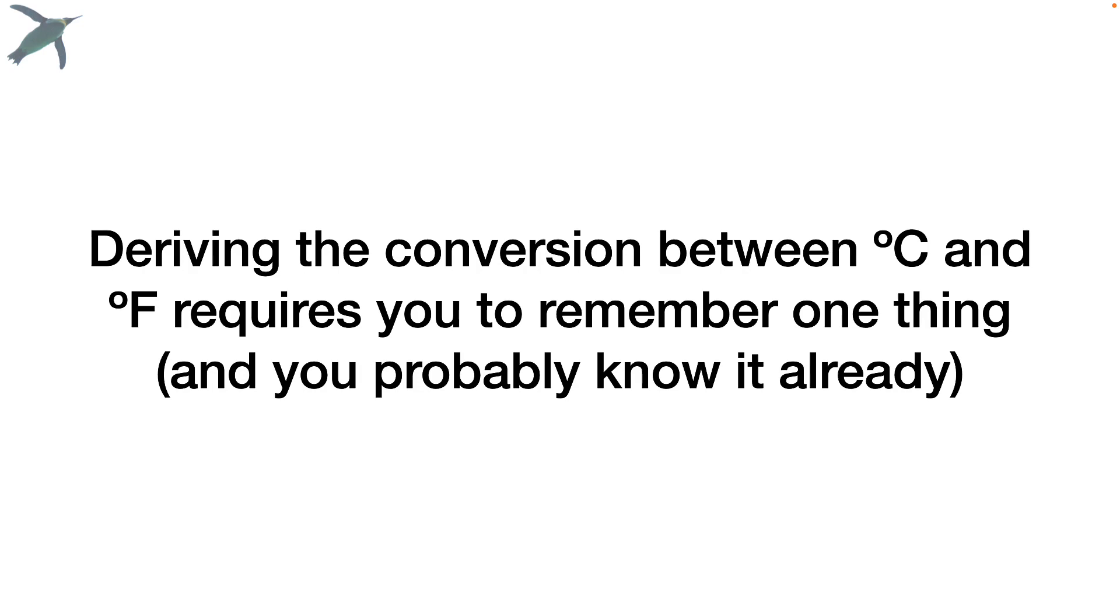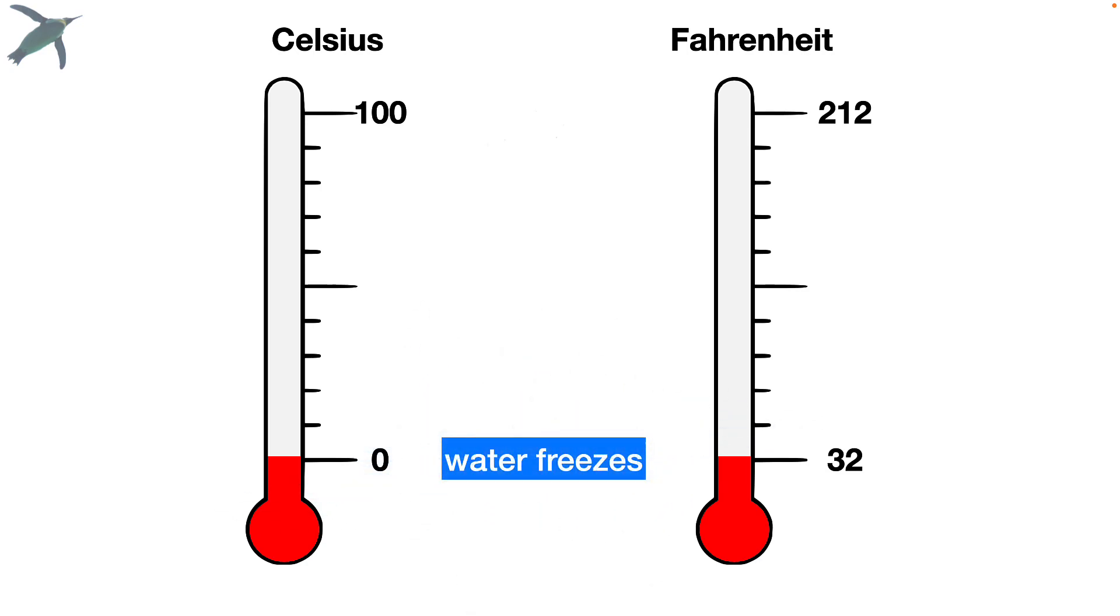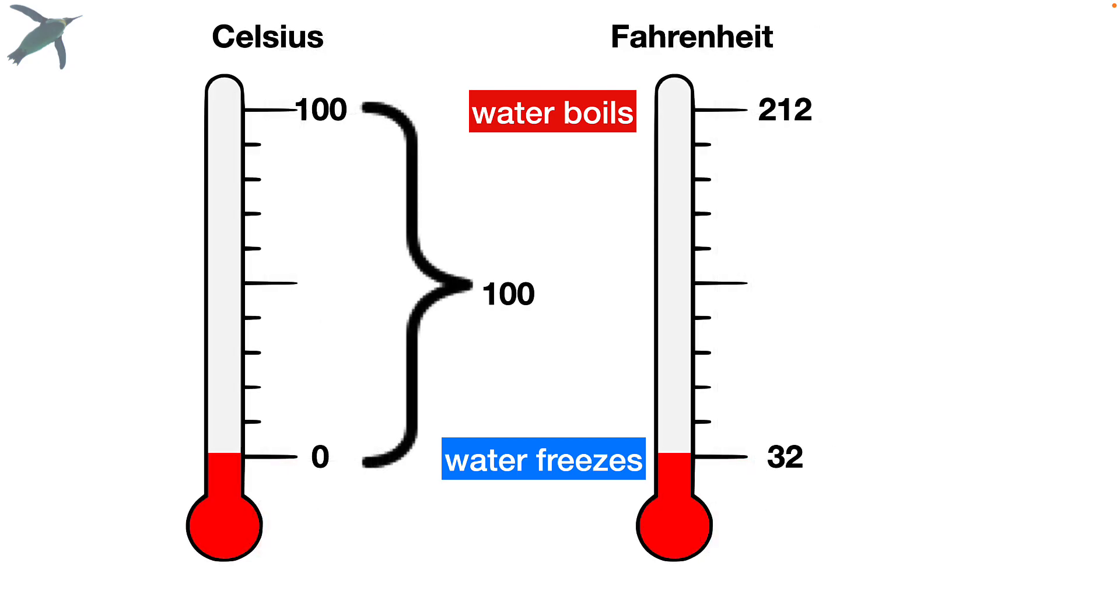Now deriving the conversion between Celsius and Fahrenheit requires you to remember one thing, and you probably know this already. And that is the temperature at which water freezes and water boils. Now the difference between those two numbers on the Celsius scale is 100, and the difference between the two on the Fahrenheit scale is 180.